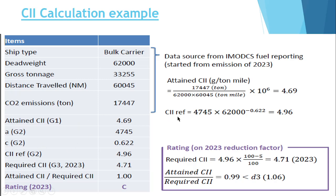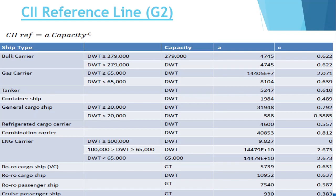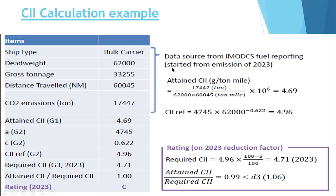Now, what is the reference? For the reference, we use the formula with the value A = 4745. The value of A is taken from the IMO table for a bulk carrier with DWT greater than 279,000. Using A and C from the table, and taking the dead weight value, we calculate: CII reference = A × capacity to the power of minus C. We get 4.96. So the CII reference is 4.96.